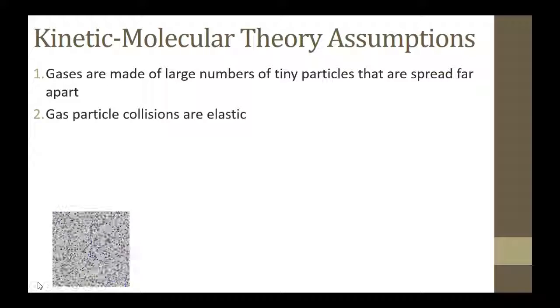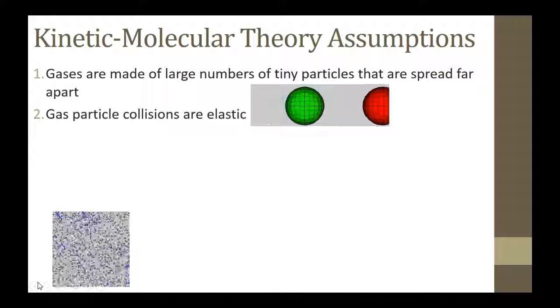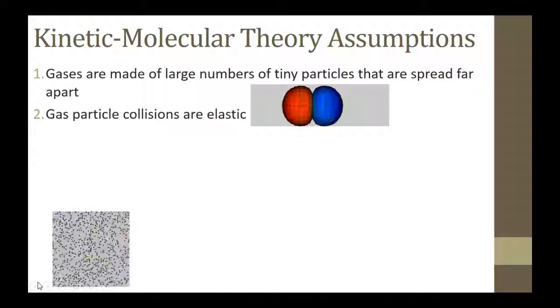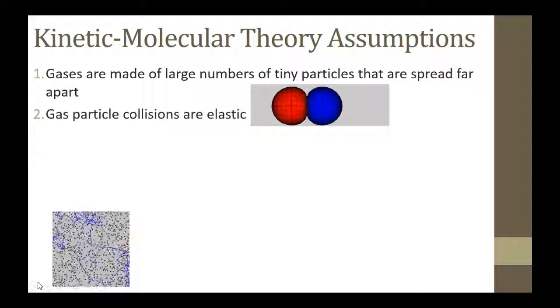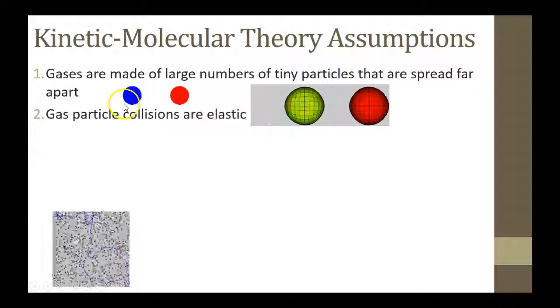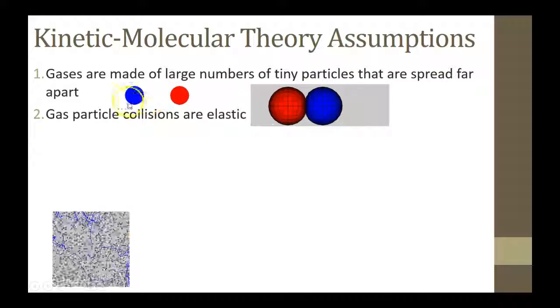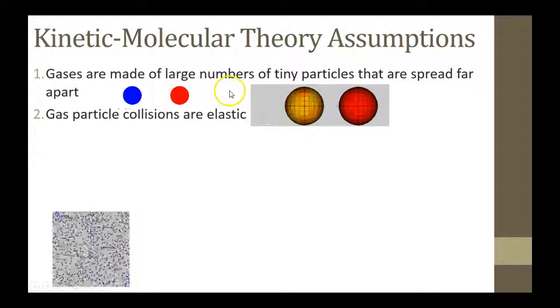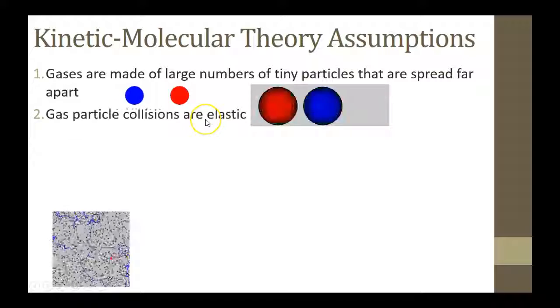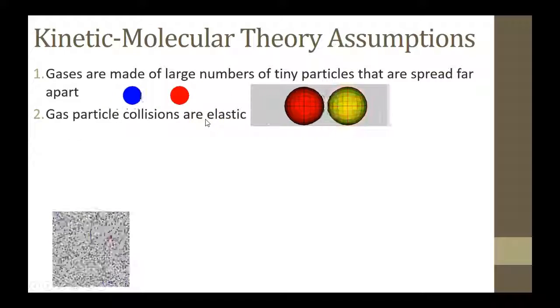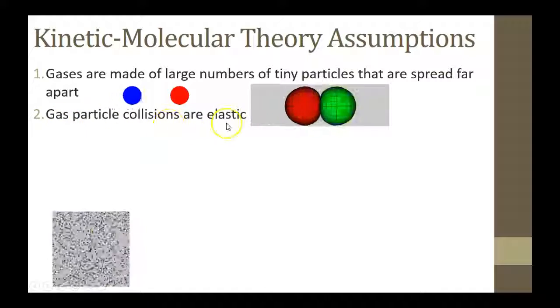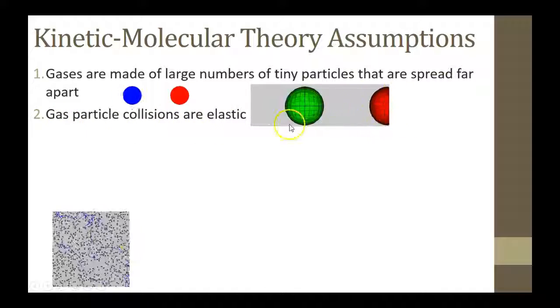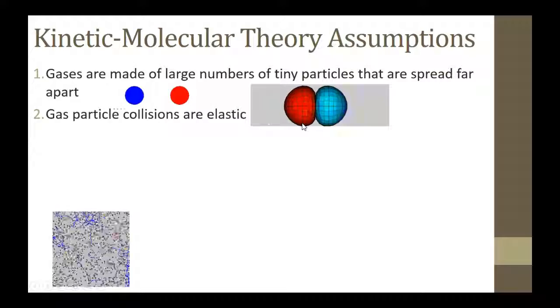Secondly, gas particle collisions are elastic. This means that when one comes in contact with the other, all of the kinetic energy is going to be transferred. Nothing is really going to be lost to heat or something else. An elastic collision is where they come in contact and one leaves with all the energy of the other. An inelastic collision would be like two beanbags hitting each other. You know they're not going to be bouncing off. An elastic collision, like we have with our gas particles, one completely bounces off. All the kinetic energy is maintained.